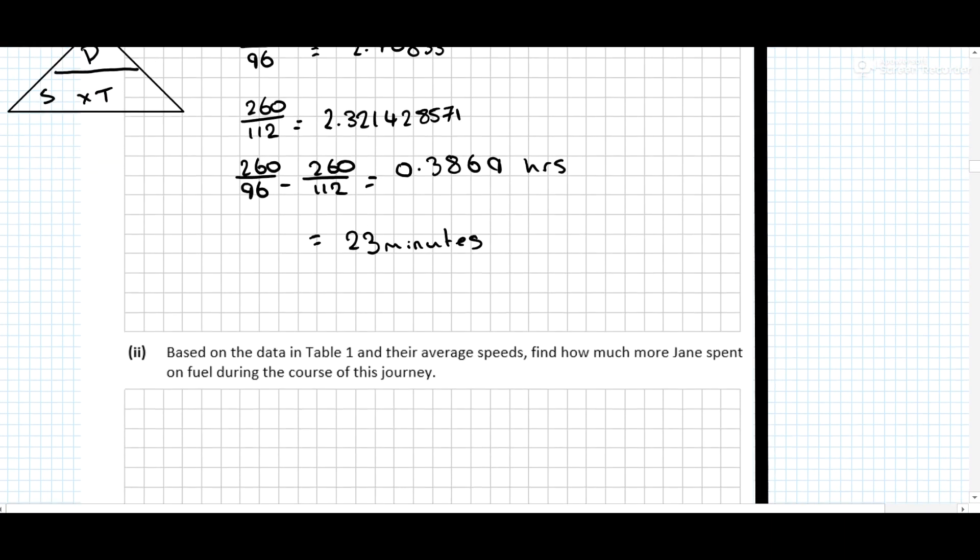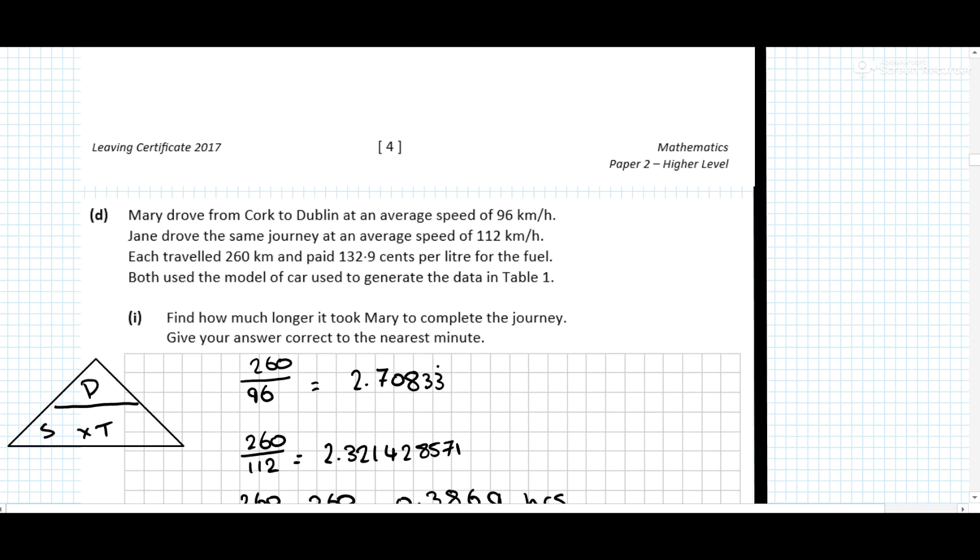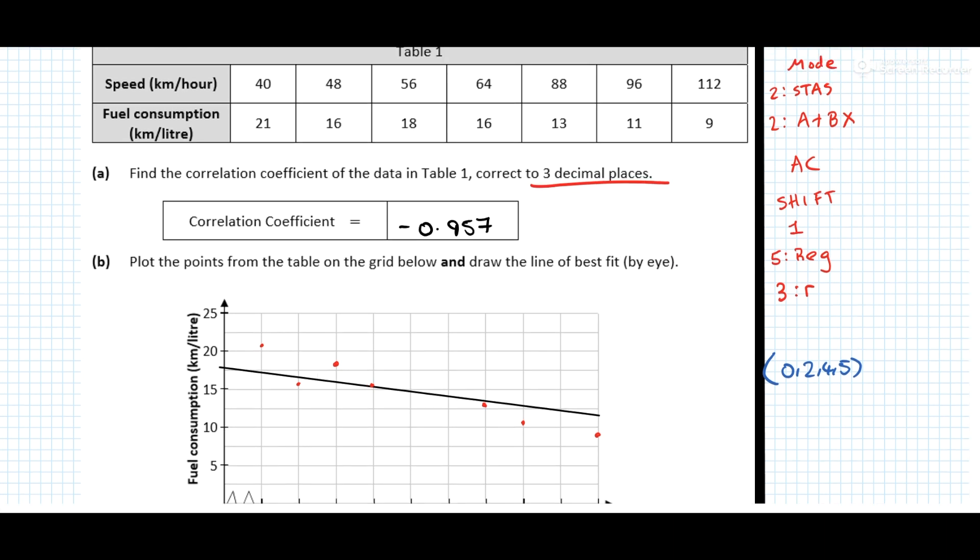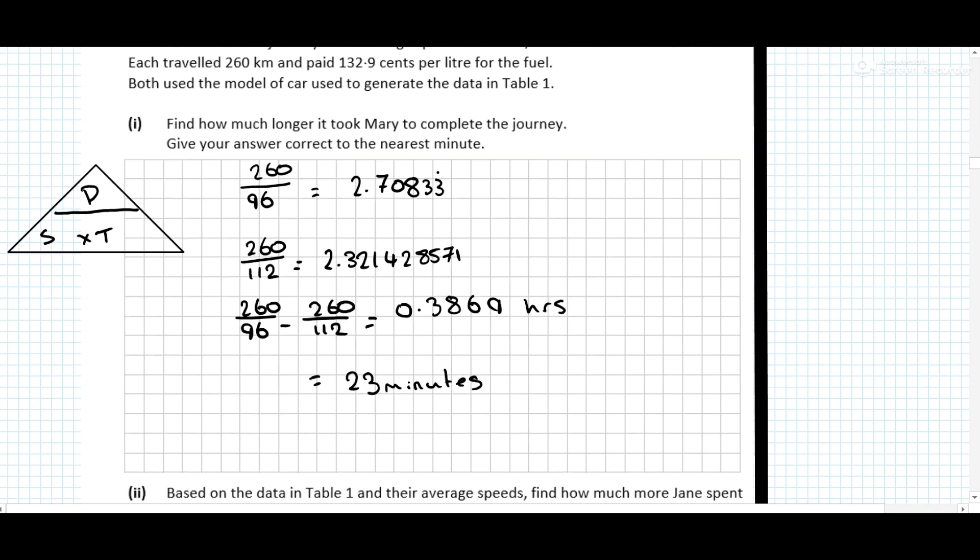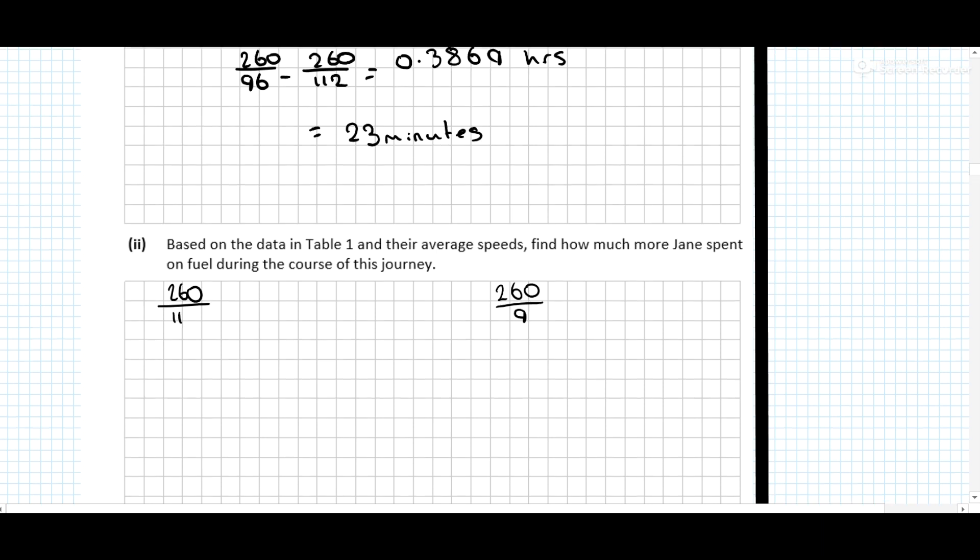Based on the data on table one and their average speeds, find how much more Jane spent on fuel during the course of the journey. So we need to go back and look at the fuel consumption for each speed. So for 96 kilometers per hour, it was 11 kilometers per liter. And for 112, it was 9 kilometers per liter. So 260 divided by 11 and 260 divided by 9. So this was Mary. This is Jane. Now, that would give us how many liters they actually used. But we know it costs 132.9 per liter. So how many liters they actually used times the cost of each liter.